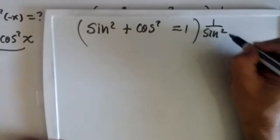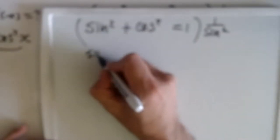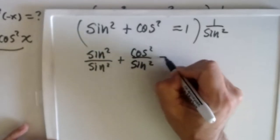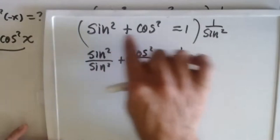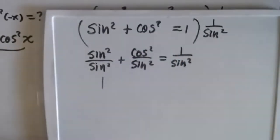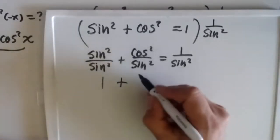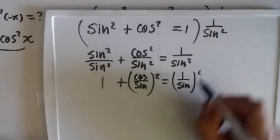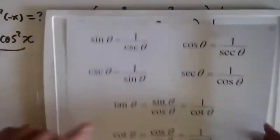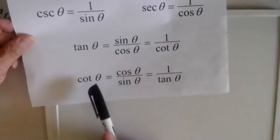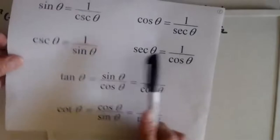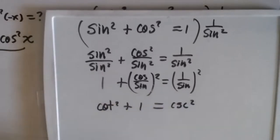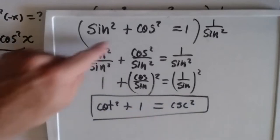One over sine squared. This divided: sine squared over sine squared plus cosine squared over sine squared equals one over sine squared. I factor the power, so this is (cosine over sine) squared equals (one over sine), everything squared. Cosine over sine is cotangent, and one over sine is cosecant. So I have cotangent squared plus one equals cosecant squared. This is another identity we can generate from the sine squared plus cosine squared identity.